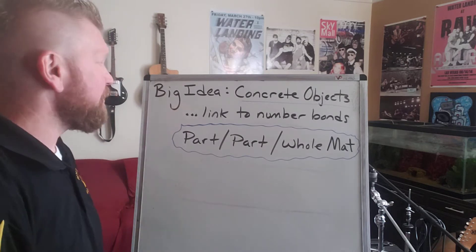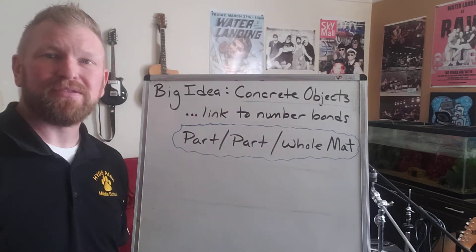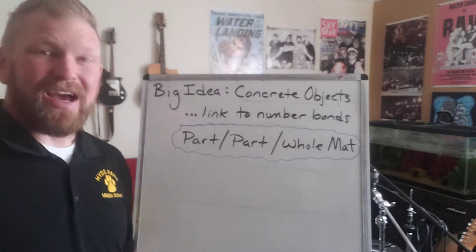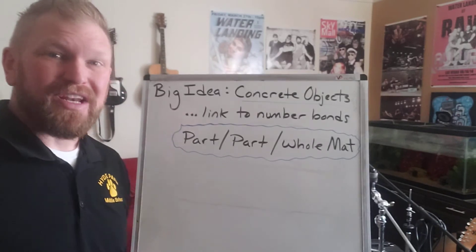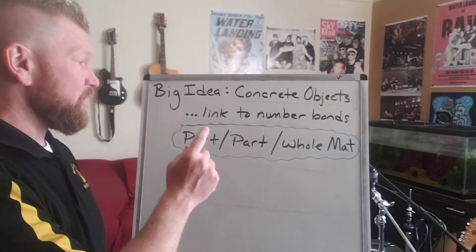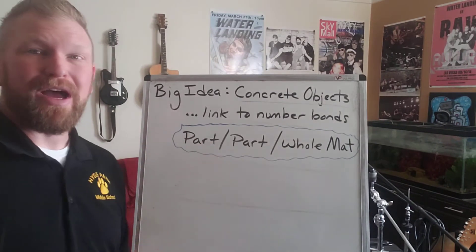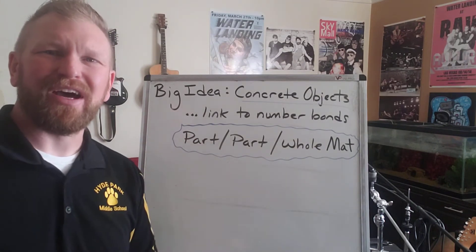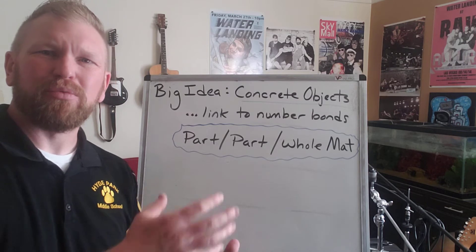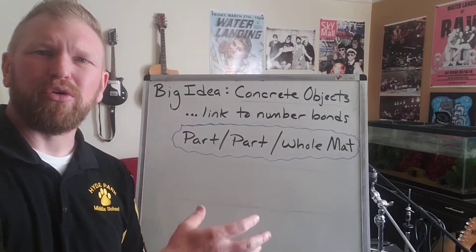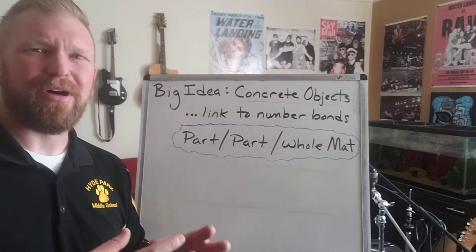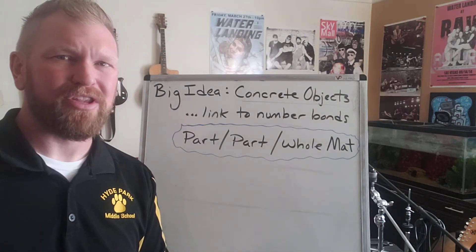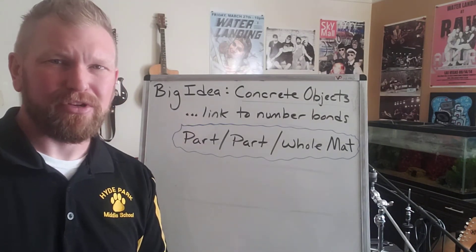Then we're going to talk about how this will link to number bonds. When I read this question, I did not know what a part-part-whole map was. But I could think about the words part-part-whole, think about that we're using cubes, and kind of figure out what's happening here. Let me show you.